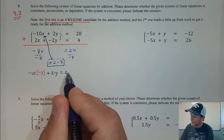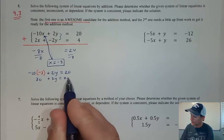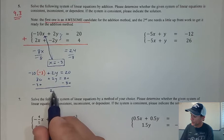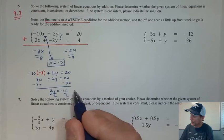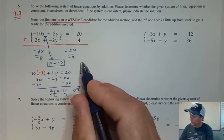Plus 2y equals 20. Here I get 30 plus 2y equals 20. Subtract the 30. I get 2y equals -10, and then divide by 2. I get y equals -5.